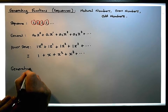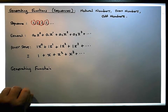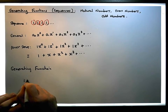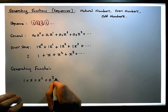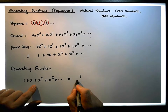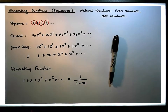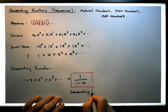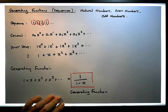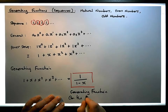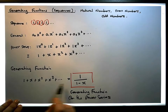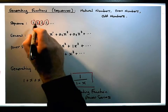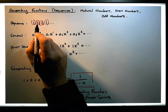This is the power series associated with this particular sequence, and we know its generating function. We calculated the generating function in the previous video. The generating function for this power series is simply one over one minus x. So the power series one plus x plus x squared plus x cubed plus dot dot dot is the same as one divided by one minus x. This is the generating function for the power series, and this power series generates the sequence of all ones.